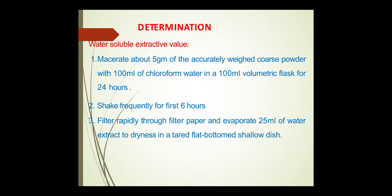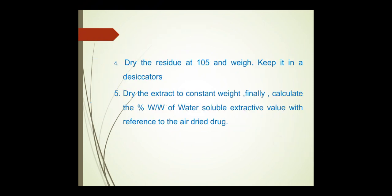Procedure for water-soluble extractive value: macerate about 5 grams of accurately weighed coarse powder with 100 ml of chloroform water in a 100 ml volumetric flask for 24 hours, shaking frequently for the first 6 hours. Filter rapidly through filter paper and evaporate 25 ml of the water extract to dryness in a tared flat-bottom shallow dish. Dry the residue at 105°C and weigh; keep in a desiccator. Dry the extract to constant weight and calculate the percentage w/w of water-soluble extractive with reference to the air-dried drug.